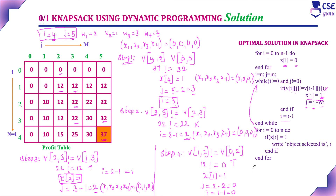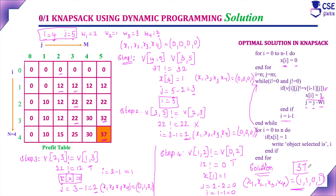The final result: for i equal to 0 to n, if x of i is 1, print that object as selected. The solution is x1=1, x2=1, x3=0, x4=1 — meaning object 1 is selected, object 2 is selected, object 3 is not selected, and object 4 is selected. To obtain the maximum profit of 37, the optimal solution selects objects 1, 2, and 4. This is the algorithm to find which objects are selected to obtain the optimal solution in dynamic programming.